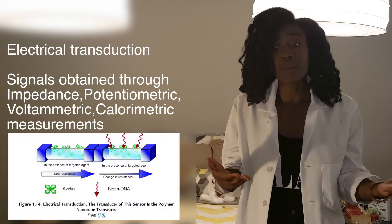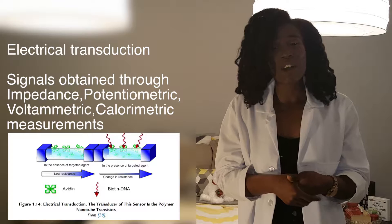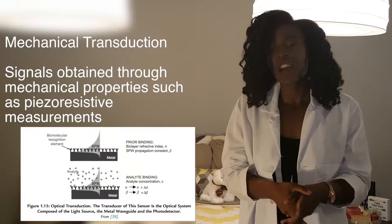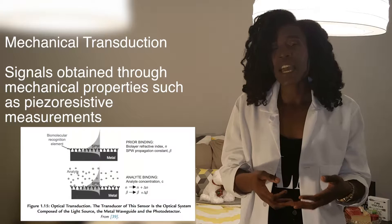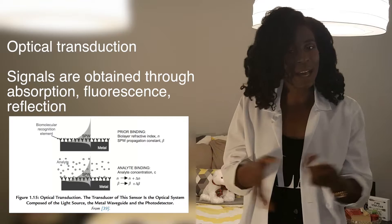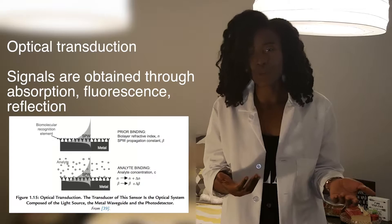With electrical transduction, signals are obtained through impedance (determining resistance), voltammetry (determining current based on a range of potential), and coulometric measurements (determining and measuring the different charges generated). During mechanical transduction, signals are obtained through piezo-resistive measurements, which depend on mechanical stress, strain, and temperature applied to the sample. The third mechanism is optical transduction, through which transduced signals can be obtained via fluorescence and absorption of different molecules.